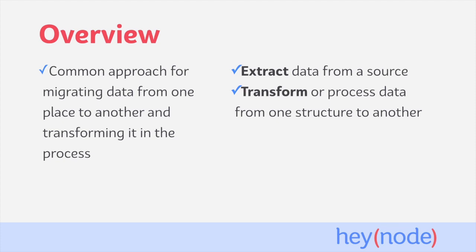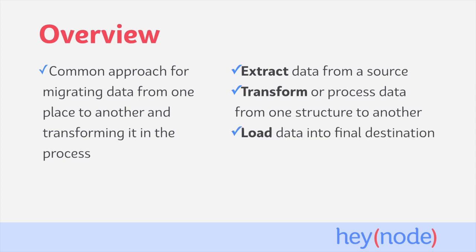Next is the Transform step. Typically, you'll be processing the data in some way — that can be cleaning the data, restructuring it, say from a CSV format into a JSON format, or computing new values. What's important is that the data you get out of the Transform step is different in some way than the raw data you got from the Extract step. The final step is the Load step, where we take the processed data from the Transform step and load it to wherever that data needs to go — typically something like a data warehouse, another database, or even Excel sheets.